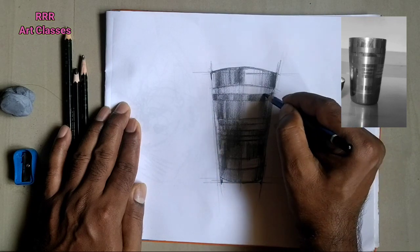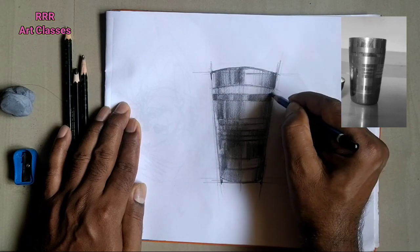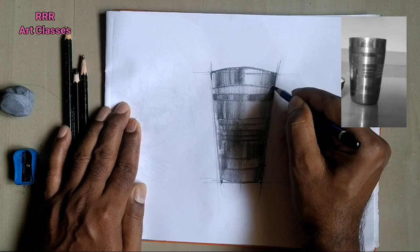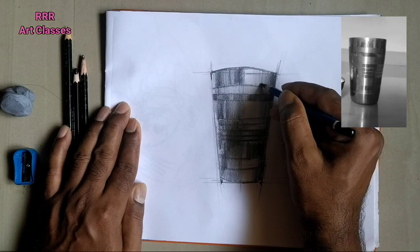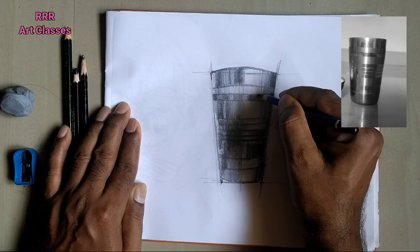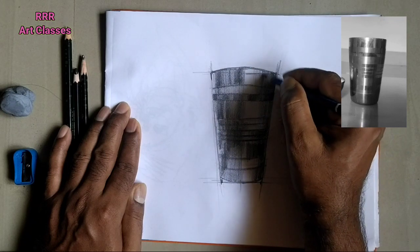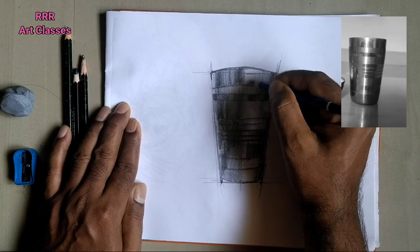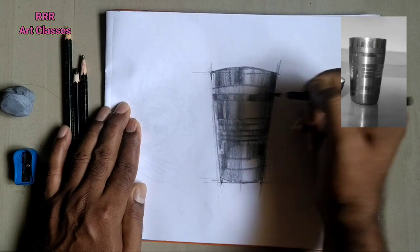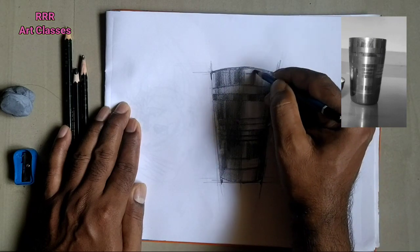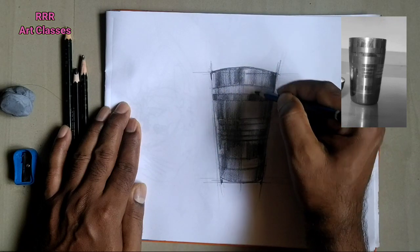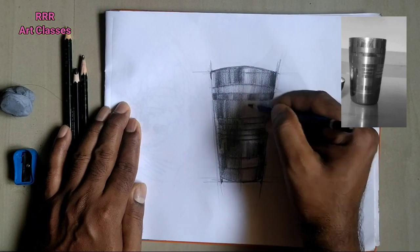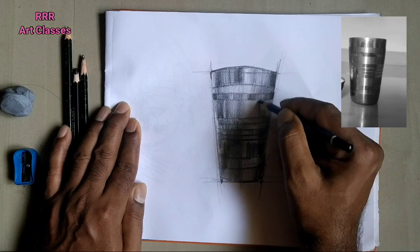But if there will be a light stroke, then you can erase them easily. If it will become a very dark tone, then you cannot erase them easily. So always keep in your mind that while you are starting, you should not go for a very dark tone initially. And carefully you observe the reference wherever it is required. There only you darken the portions otherwise leave it.